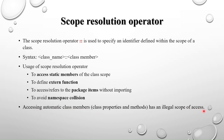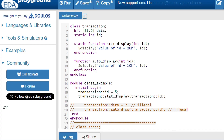One important point: accessing automatic class members using the scope resolution operator is illegal. Inside the class, anything not declared as static is automatic by default — functions, tasks, and data members are all automatic by default. So we can only access static members of the class using the scope resolution operator.